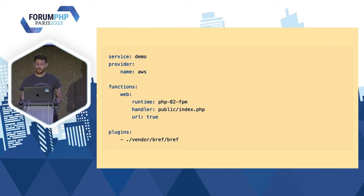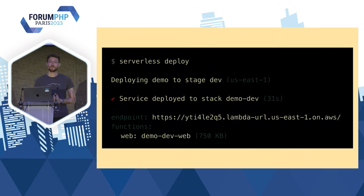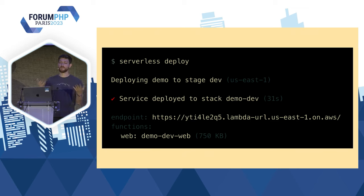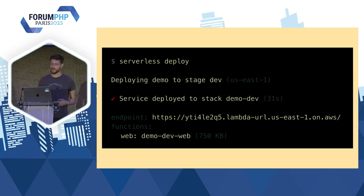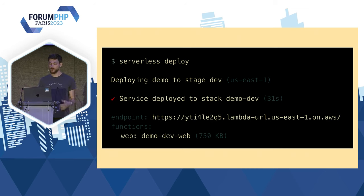Ensuite, je déploie avec la commande serverless deploy — serverless, c'est un projet open source — et ça va nous déployer tout ce qu'il faut dans notre compte AWS à nous, et ça nous sort l'URL de notre application. On peut faire des bases de données, des crons, des workers, plein de choses, mais c'était vraiment pour vous donner une intro à comment ça s'utilise de manière très simple.